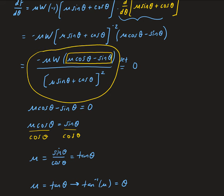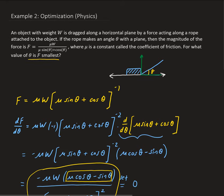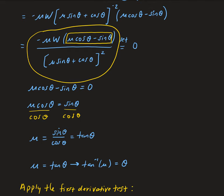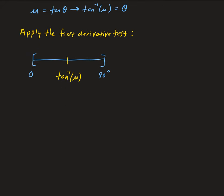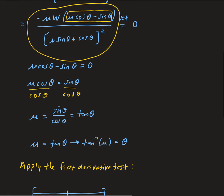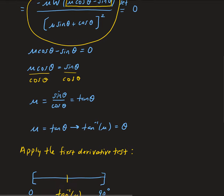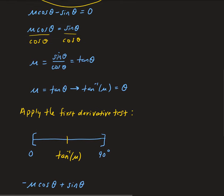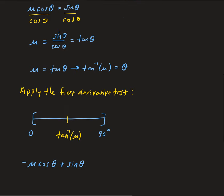Looking at the first derivative: we don't need to be concerned with the denominator because it's squared, so it's always going to be positive. And mu and W are always positive — mu is the coefficient of friction, W is the weight. So we just need to see what's happening with the factor: negative mu times cosine theta plus sine theta, i.e., (−mu cosine θ + sin θ), to figure out whether the derivative is positive or negative.